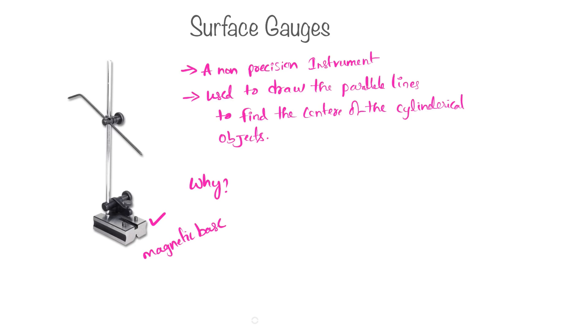And this is the vertical bar used to hold this scribbler with the help of universal clamp. So this is the construction of surface gauge.